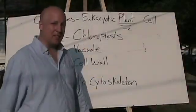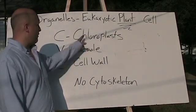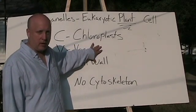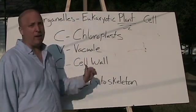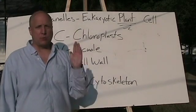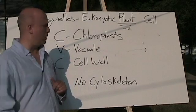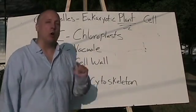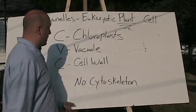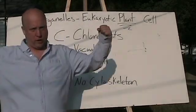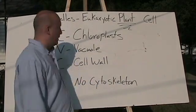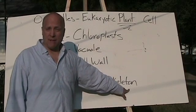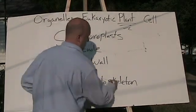Thank you. Hi — these are the organelles for a eukaryotic plant cell. You'll see that we have chloroplast, vacuole, and cell wall. The plant cell also has all the others from 'leg cramp' and 'very new city' — lysosomes, endoplasmic reticulum, Golgi complex, cytoplasm, ribosomes, mitochondria, nucleus, plasma membrane, vesicle, and nucleolus. There is no cytoskeleton in the plant cell, because the cell wall provides the strength and support that the cytoskeleton provides for the animal cell.